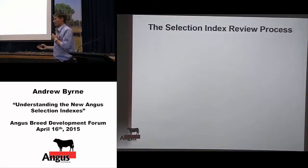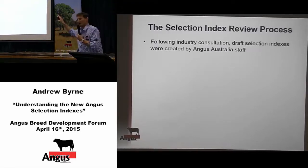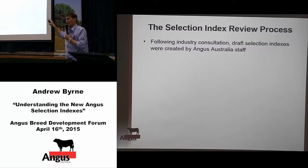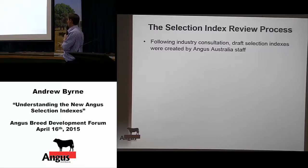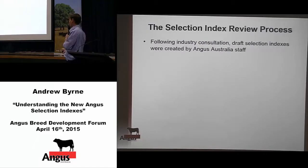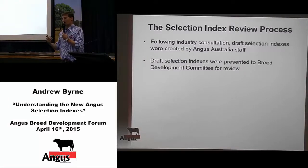Once we actually did the review process — which was essential to the whole review of the indexes — that was probably the easy part, just going out and listing to people and gathering their feedback. Once we'd done that, we were then at the task of actually going through and identifying what changes we needed to do to the selection indexes. Based on that feedback, we came back to the office and revised the selection indexes, predominantly led by Carl as our breed development manager. Those draft selection indexes were then taken back to industry for consultation and feedback.